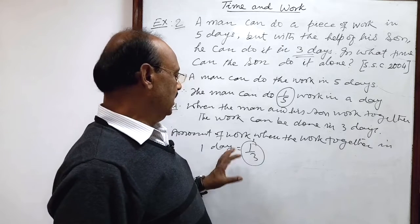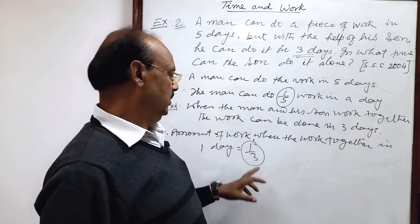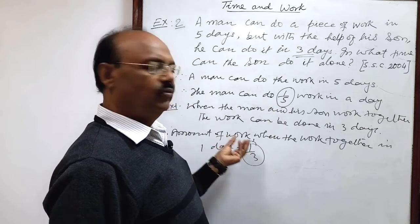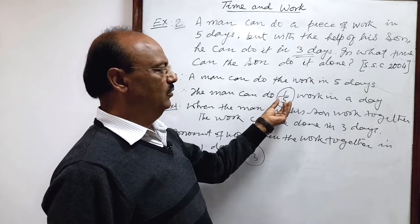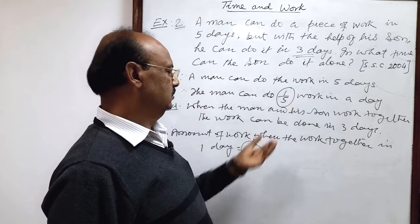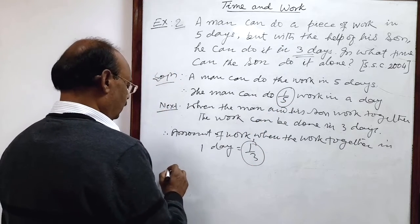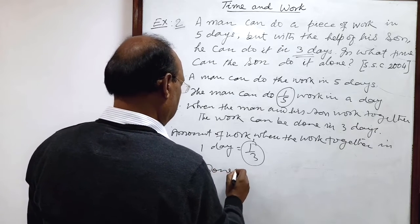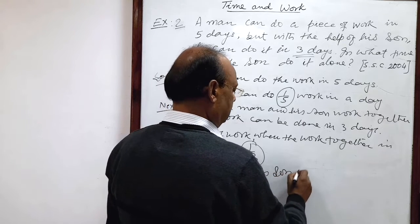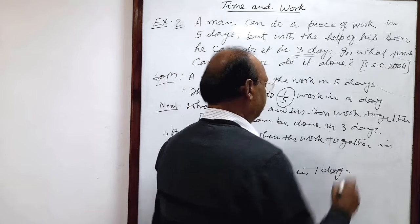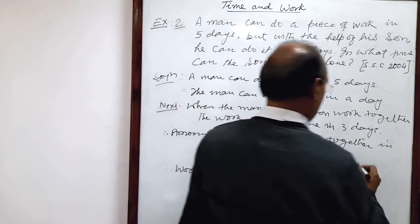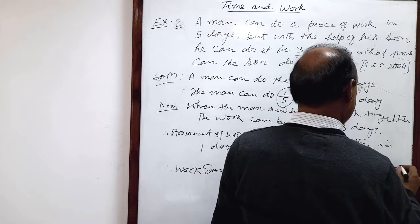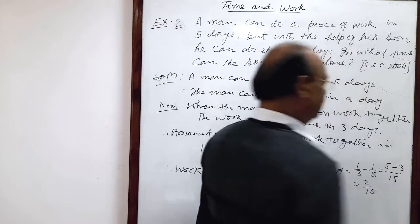So amount of work done by his son alone is the difference of these two numbers. Because this is the number when both work together, and this is the part of the work when the man works alone. Therefore, work done by his son in one day: one by three minus one by five. LCM is fifteen. And this is five minus three, this is equal to two by fifteen work has been done.